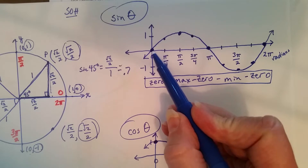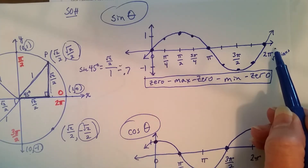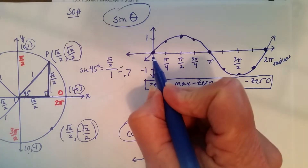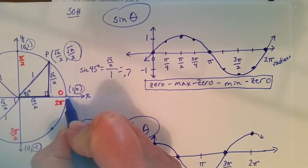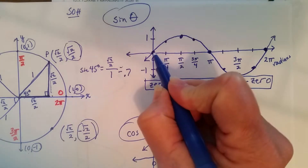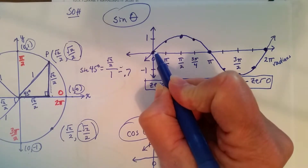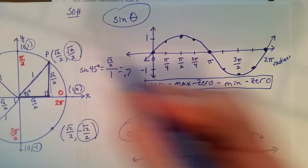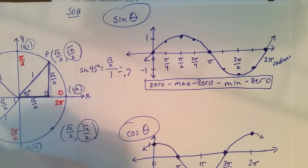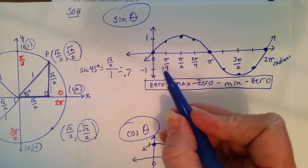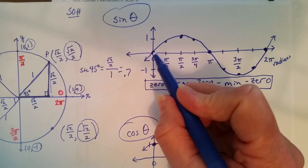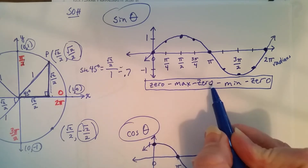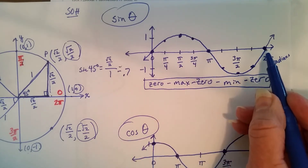The sine curve — this x-axis represents radians, and the y-axis represents the value. At zero radians, which is the same as zero degrees, the value of the sine is zero. We got to pi over 2, which is 90 degrees, the value of the sine is 1, and we kept going in that fashion and generated these values. So the five-point pattern for the sine is: zero, max, zero, min, zero. That's your sine curve.